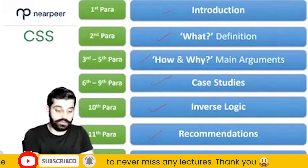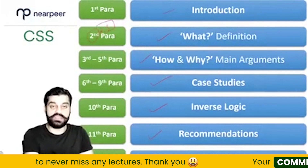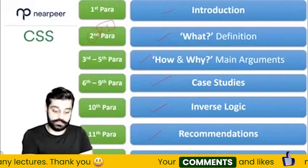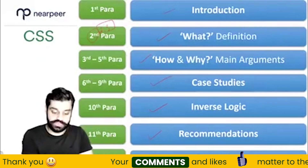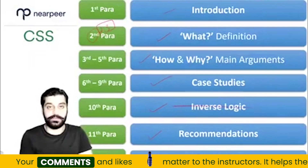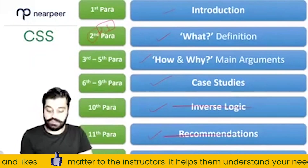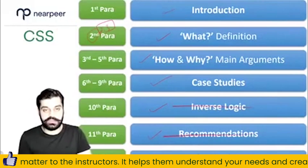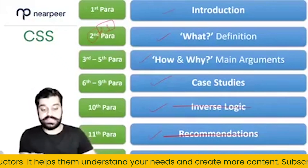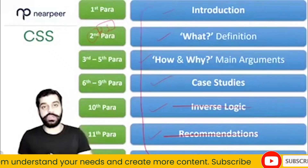This is a very general scheme and you can alter it. Sometimes, like in a particular essay, the second or third element might be context or definitions. Sometimes main arguments come first, or case studies. Sometimes inverse logic does not exist in a topic. Sometimes the topic itself is recommendation-centric, so you don't need a separate heading for recommendations. But broadly speaking, these are the elements along which one should think.